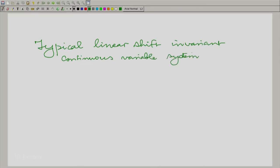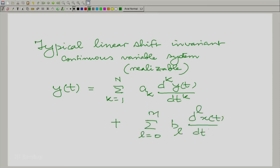Remember, if you looked at the typical system, typical linear shift invariant continuous time system, particularly one which is rational or realizable, then we said it has a typical system description given as follows. Y of t is summation k going from 1 to n, the kth derivative of y(t) multiplied by a_k plus a similar summation on the derivatives of the input.